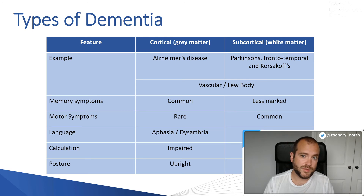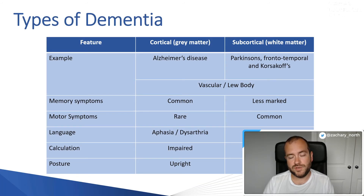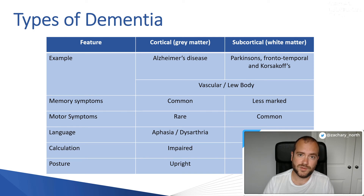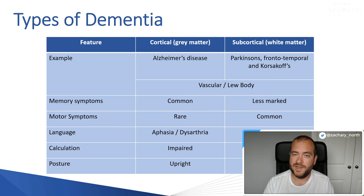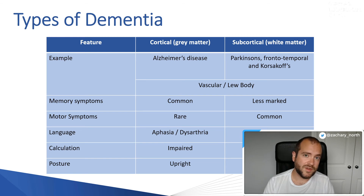In terms of posture, cortical dementia patients are generally upright because they don't have motor symptoms. For subcortical white matter dementias, memory symptoms are initially less marked, but motor symptoms — tremor, Parkinsonian gait, falls — are quite common. Language is normally dysarthric; although patients know what they want to say, they can't physically get the words out because the motor function of their larynx, tongue, and mouth is impaired. Calculation, interestingly, is less impaired.